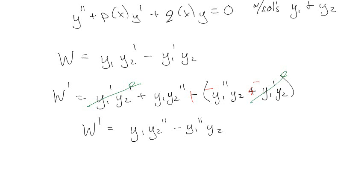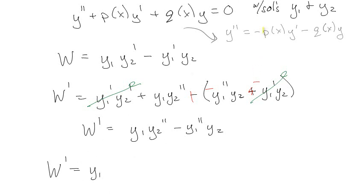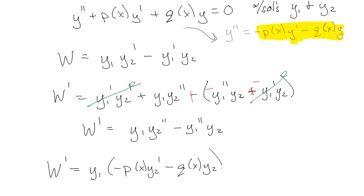We need formulas for Y1'' and Y2'', which we can get from the original equation. In general, Y'' = -P(x)·Y' - Q(x)·Y. We can just plug that in. So W' equals Y1 times Y2'' — substituting in gives Y1 times the quantity negative P(x)·Y2' minus Q(x)·Y2.